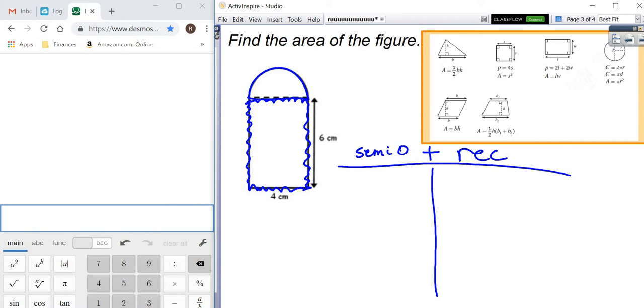So if you look up here, the area of a circle is pi r squared, but that's only half a circle. So we have to put a one half in front of it. Then we need the area of a rectangle.